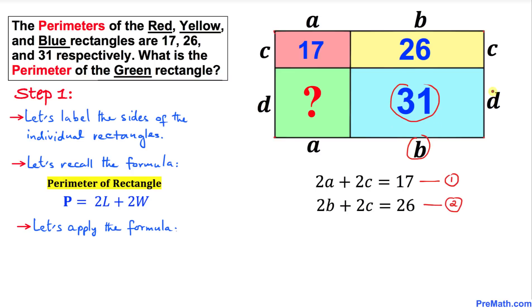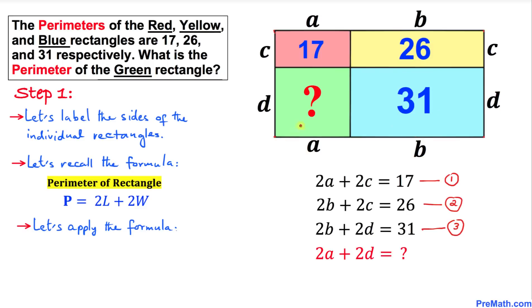Now let's focus on the blue rectangle. The perimeter is going to become simply two times b plus two times d. So: 2b + 2d = 31. I'm going to call this equation number three. Now we are going to calculate the perimeter of the green rectangle, which is going to be 2a + 2d equals question mark.